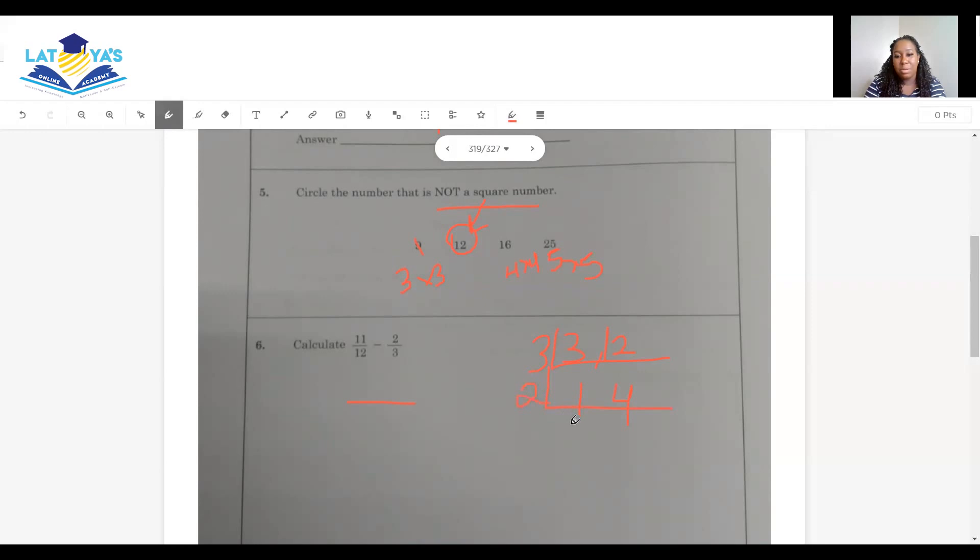3 into 3 is 1 and 3 into 12 is 4. What can I use now? Bring down my 1. 2 into 4 is 2. What can I use now? Bring down my 1. 2 into 2 is 1. So I multiply the numbers I use on the outside. 3 times 2 is 6. 6 times 2 is 12. The LCM of 12 and 3 is 12.